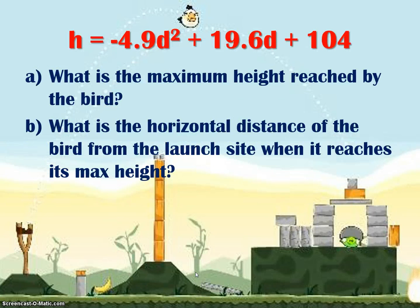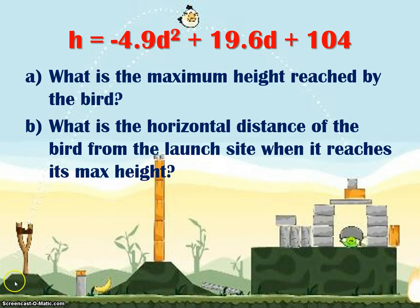Some questions that could be asked are: what is the maximum height reached by the bird, and what is the horizontal distance of the bird from the launch site when it reaches this maximum height? So first we want to know what is h — what is the maximum height? How high is this bird going to get? And then we're going to look for d — what is d when this maximum height is achieved?